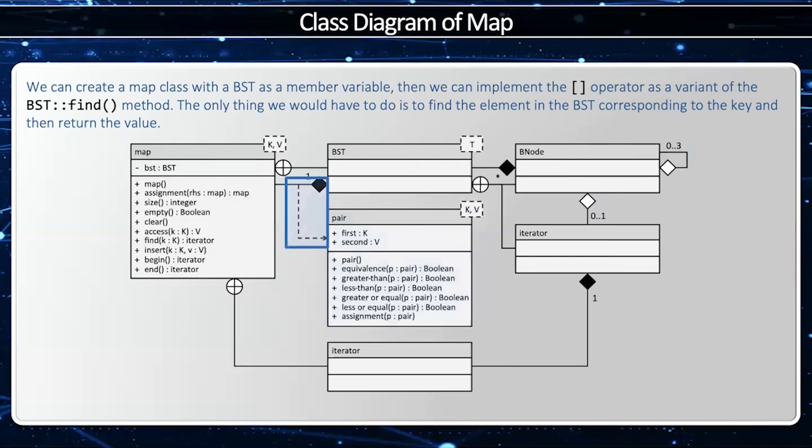Notice we have this weird dot, dot, dot arrow. And what this means is that the map is going to turn the key value into a template, into a T, based on the pair.